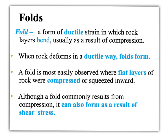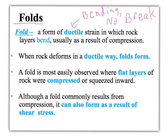The first type of strain we're going to talk about is called a fold. A fold is a ductile type of strain, which means it just has bending and twisting, but there's no breaking in the rock. In a fold, the rocks get bent. Most of the time, we see folds come from compression strain, which is usually at convergent boundaries.